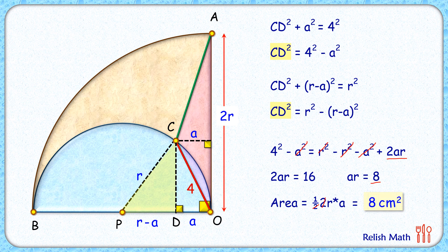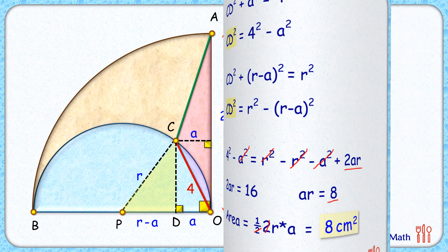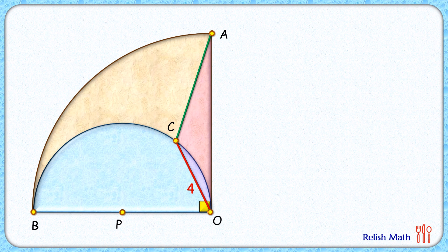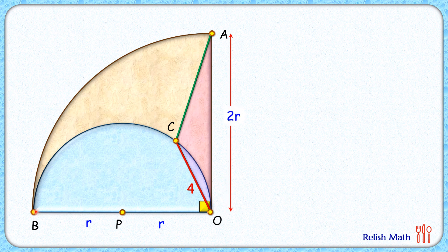Let's check the second approach — same question solved by similar triangles. We assume the radius of the semicircle as r centimeters, so the radius of the quadrant is 2r. Joining BC, angle C is subtended by diameter BO, so this angle will be 90 degrees.